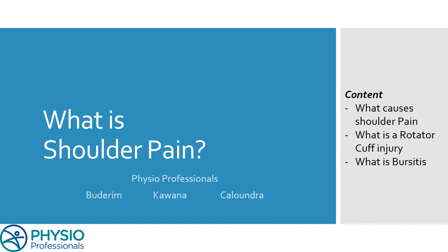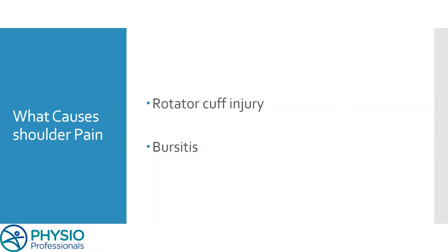On Sunday, we're going to go through some of the early stage treatments to give people with these sorts of injuries a bit of relief. The two most common things we see that cause shoulder pain are a rotator cuff injury or bursitis. Those two are going to be the ones we focus on today, and we might talk about some of the other causes later on in the future.